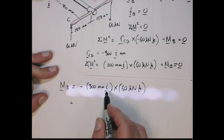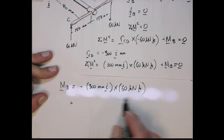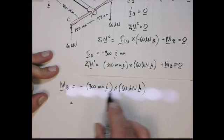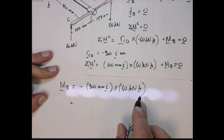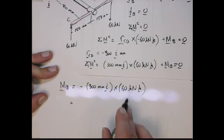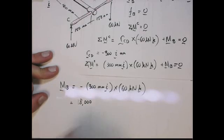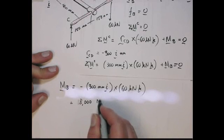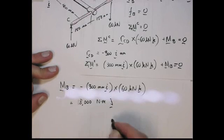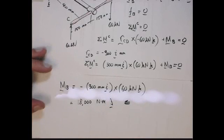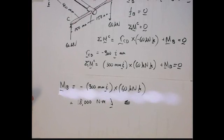When we do the cross product, the scalars multiply, and then you do the cross on just the unit vectors. So I cross K is a minus J, and that now gives us a minus and a minus, which becomes a positive. So 18,000 newton meters in the J direction. That is the internal moment.